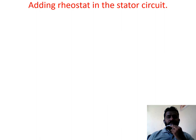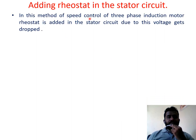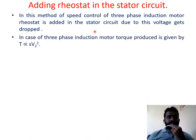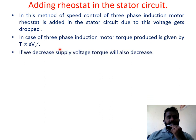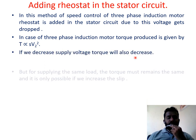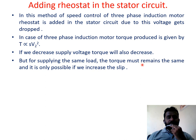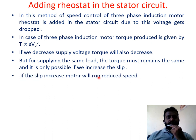Adding a rheostat in the stator circuit: a rheostat, which is a variable resistor, is added in the stator circuit. Due to this, voltage drops across the resistance. If resistance is increased, voltage automatically decreases. Since T is proportional to V², decreasing supply voltage decreases torque. But for supplying the same load, torque must remain the same, so slip increases and motor speed decreases.